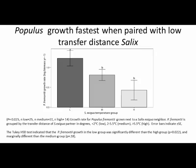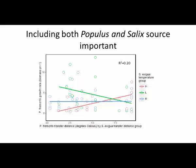When we looked at the identity of the willow partner, we found that Populus grew fastest when paired with a low transfer distance partner. Here we have Populus growth on the y-axis and Salix temperature transfer distance on the x-axis — the low transfer distance willow partner resulted in higher Populus growth. So among paired Populus, we're seeing a differential effect depending on which subset of partners they're grown with.